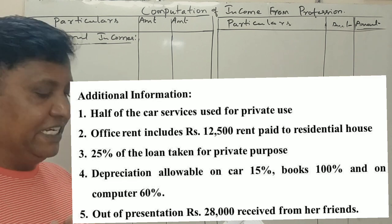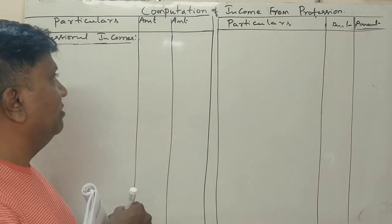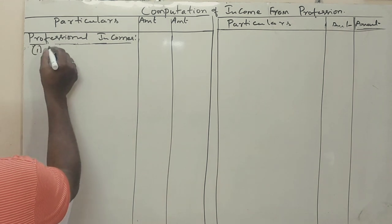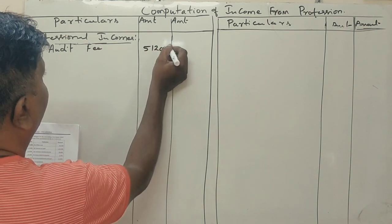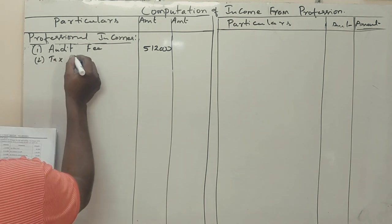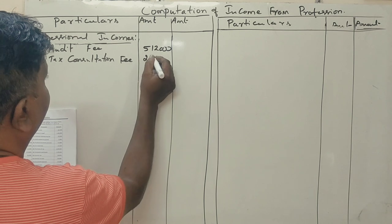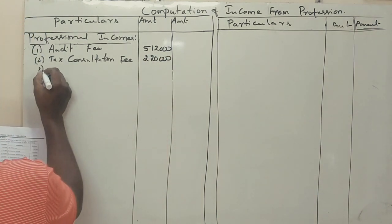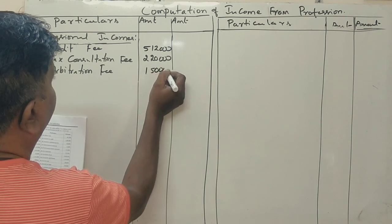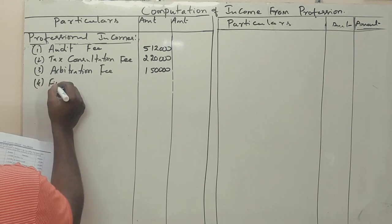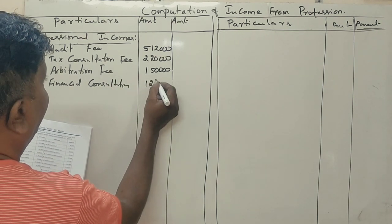Now, 5 adjustments. On the receipt side — professional incomes. First, audit fee: 5,12,000. Next, tax consultation fee: 2,20,000. Next, arbitration fee — this is professional income. Financial consultancy fee: 1,28,000.